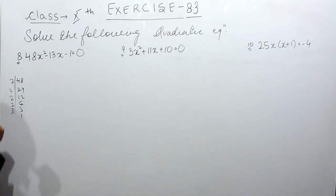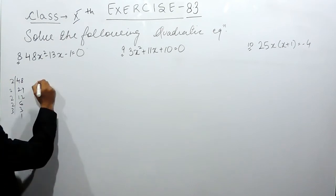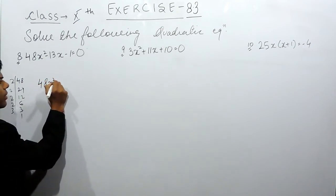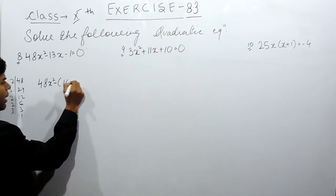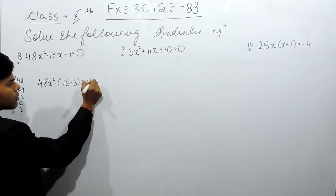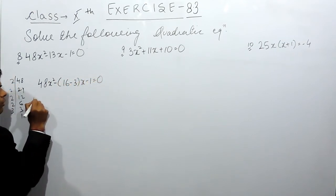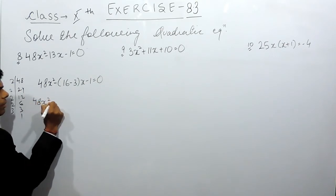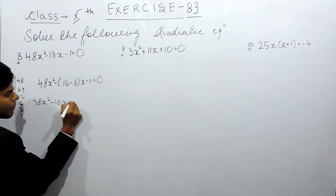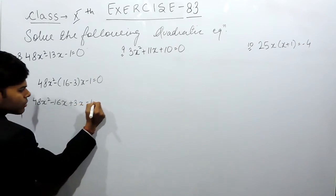2×16, and 16 minus 3 is 13. So we can write this like 48x² - 16x - 3x - 1 = 0. So 48x² - 16x + 3x - 1 = 0.